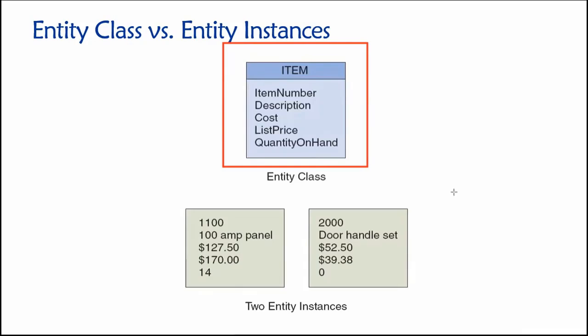Once we start to provide specific values for these various attributes—like once I have an item number and a description of that item and its cost, its list price, how many of them we have in our inventory—then what we're doing is we are recording information about an instance of an item, a specific real-world thing.